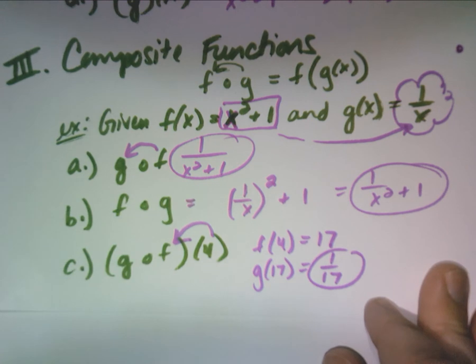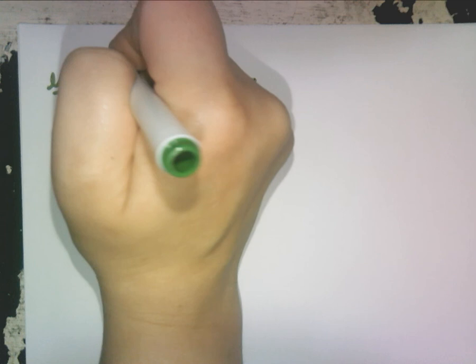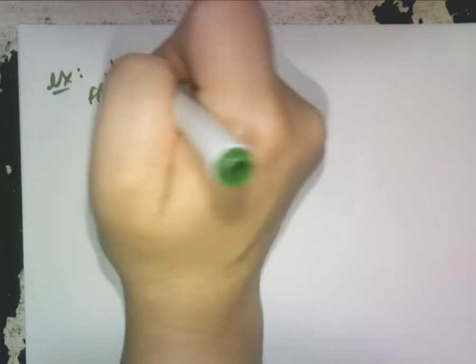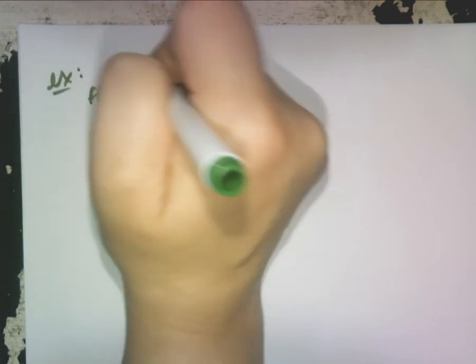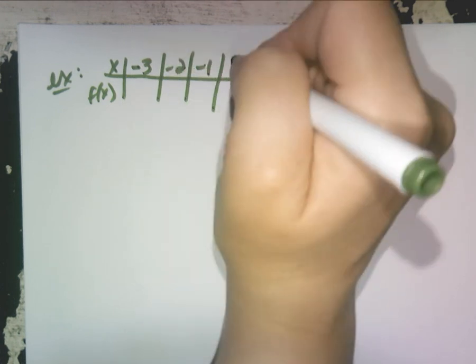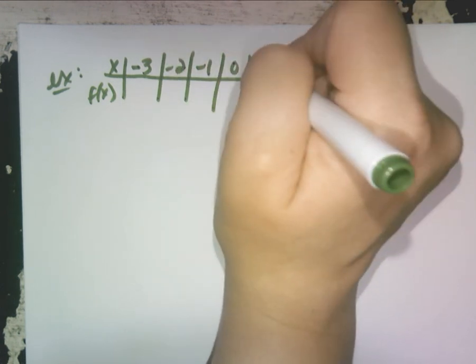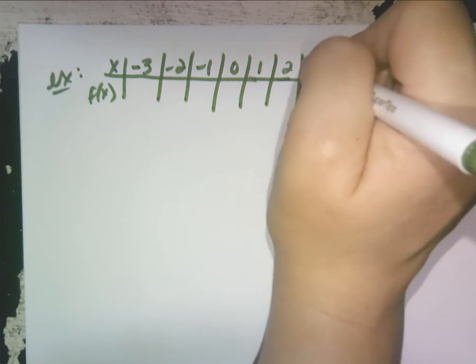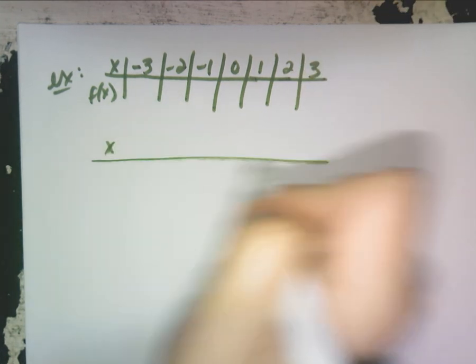One of the most important parts — this is on the SPCC exam — is doing fog and gof with tables. Last year's students had a little tricky time at first, but once they saw it they got it. This is calculus-level work. Let me set up the tables. We'll use x values like negative three, negative two, negative one, and so on.